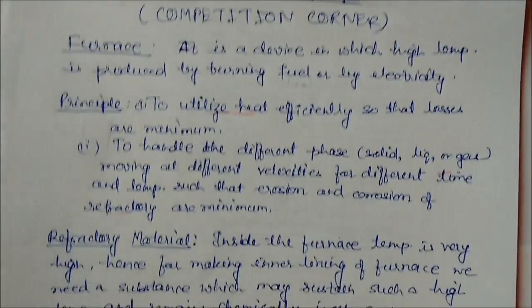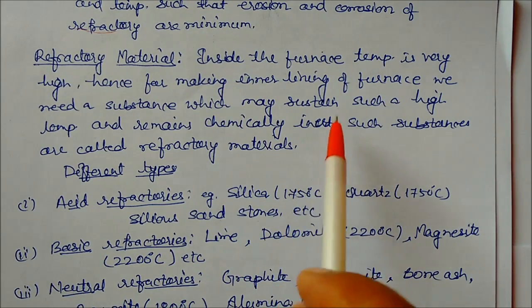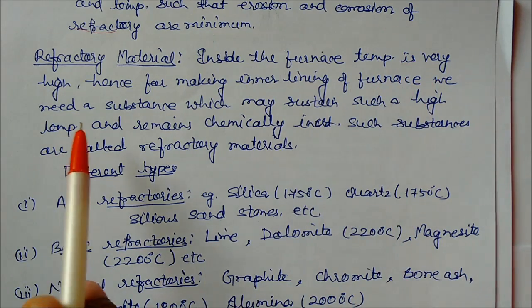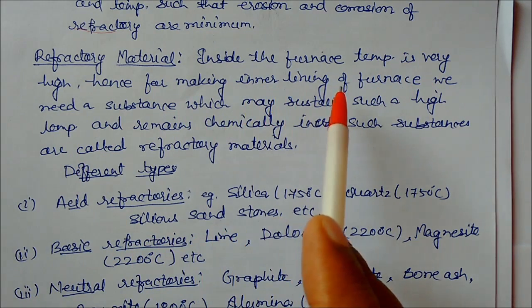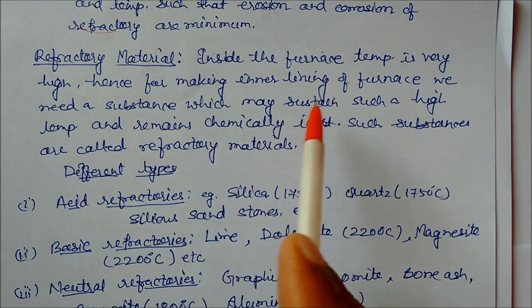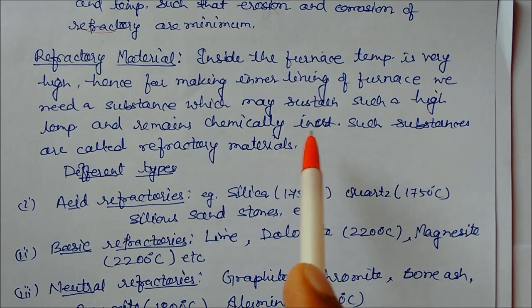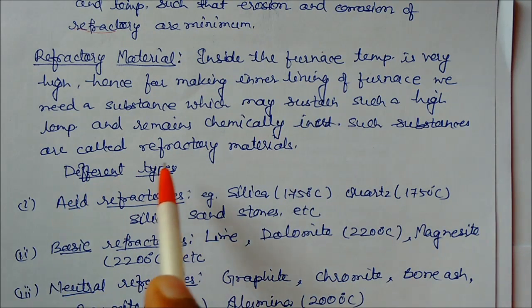What is refractory? Refractory material is inside the furnace where temperature is very high. Hence for making inner lining of furnace, we need a substance which may sustain such high temperature and remain chemically inert. Such substances are called as refractory.